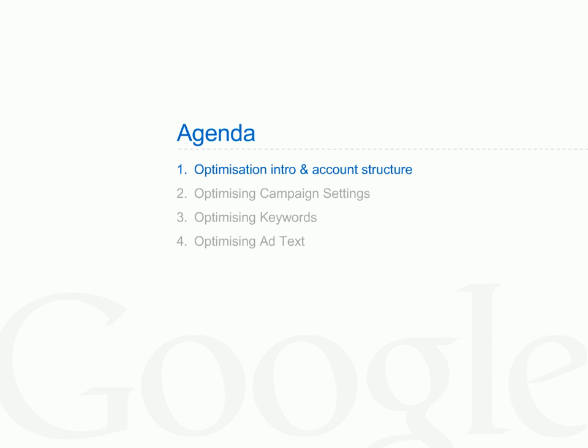First, we'll introduce our recommended approach to optimization and discuss optimal account structure. Then we detail some campaign settings optimization techniques before thinking about what makes a good keyword list. Finally, we'll look at getting the most out of your text ads.